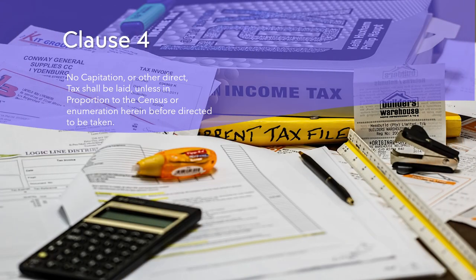Clause 4 is a provision that prohibits Congress from imposing direct taxes on the people of the United States unless they are apportioned among the states according to their population. A direct tax is a tax that is levied on a person or property, such as a poll tax or a land tax. An indirect tax is a tax levied on a transaction or activity, such as a sales tax or an income tax. The purpose of this clause was to prevent the federal government from using its taxing power to favor or discriminate against certain states or regions and to protect the rights and interests of the smaller states.